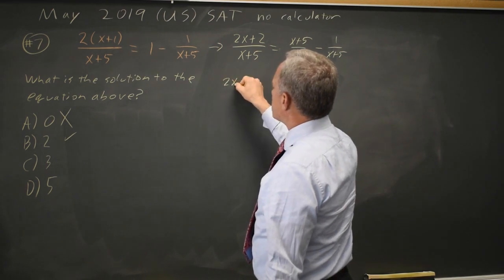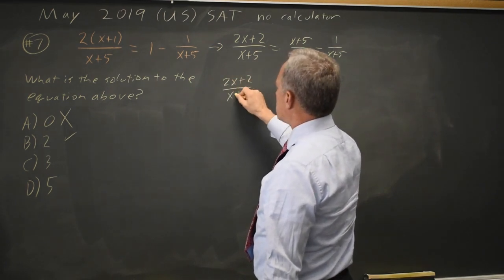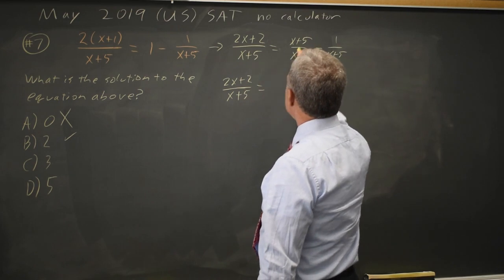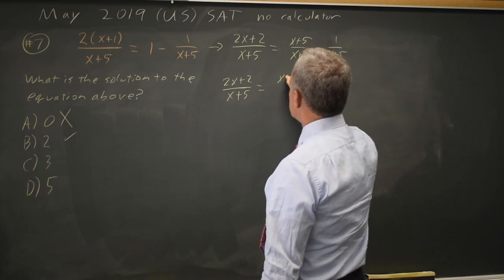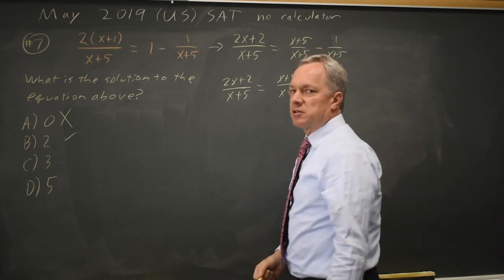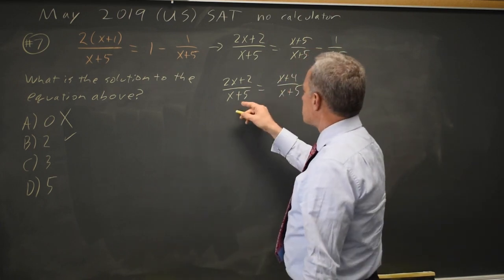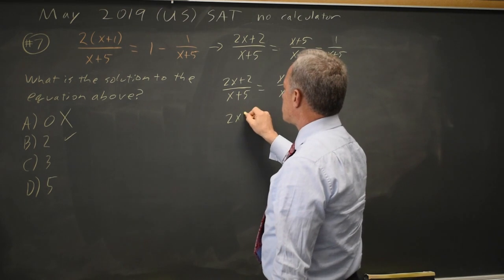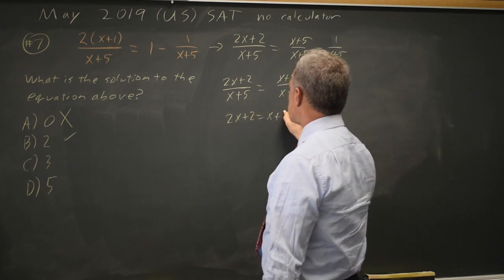Combining fractions, that's 2x plus 2 over x plus 5 equals x plus 5 minus 1 is x plus 4 over x plus 5. These are equal if the numerators are equal, if they have the same denominator. 2x plus 2 equals x plus 4.